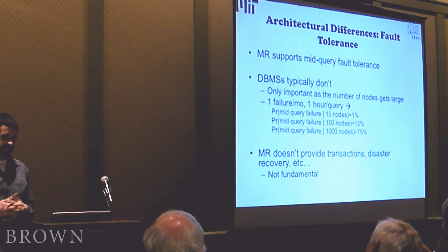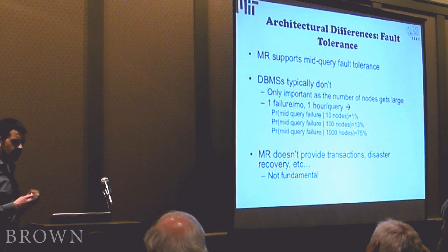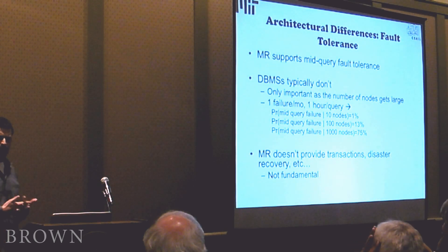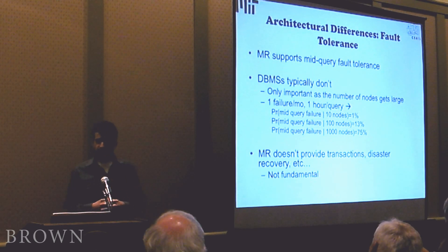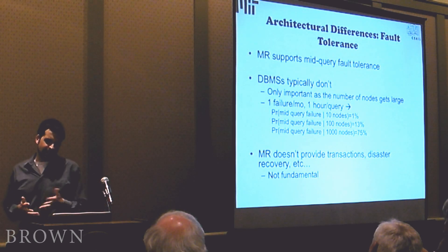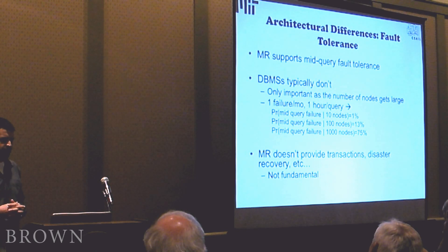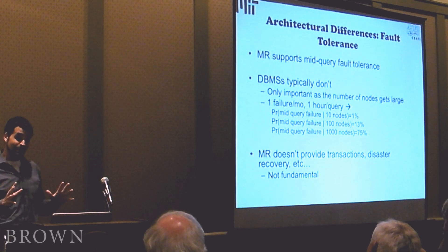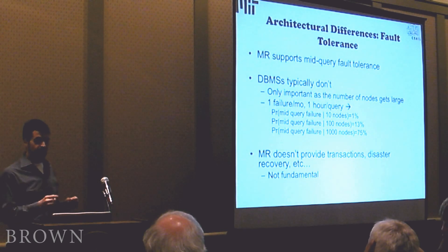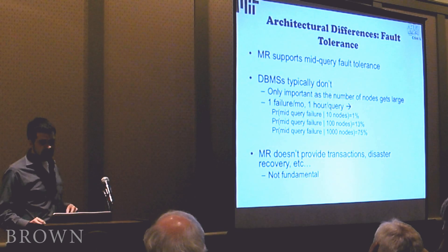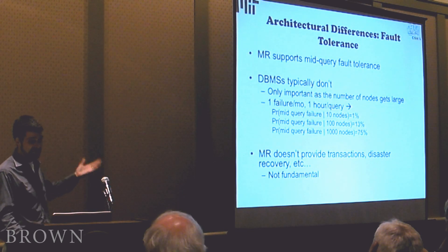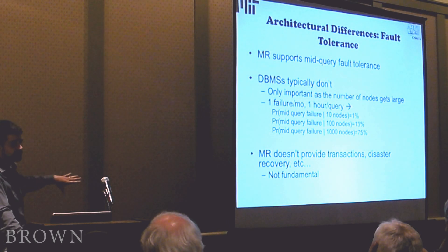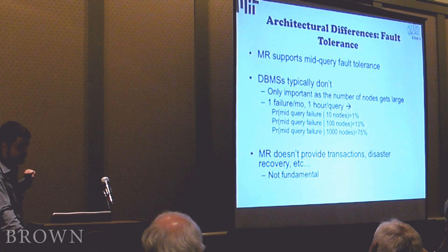If you look at parallel database systems, big installations often aren't larger than 100 or 200 nodes. The largest parallel Teradata installations are about 200 nodes. This argues that MapReduce requires you to use a lot of nodes because its performance isn't that good, whereas database systems typically can do the same computation with less hardware. MapReduce also has other fault-tolerance features that databases don't provide, like transactions and disaster recovery, though it's probably possible to bolt all this onto the MapReduce framework if you really want to.